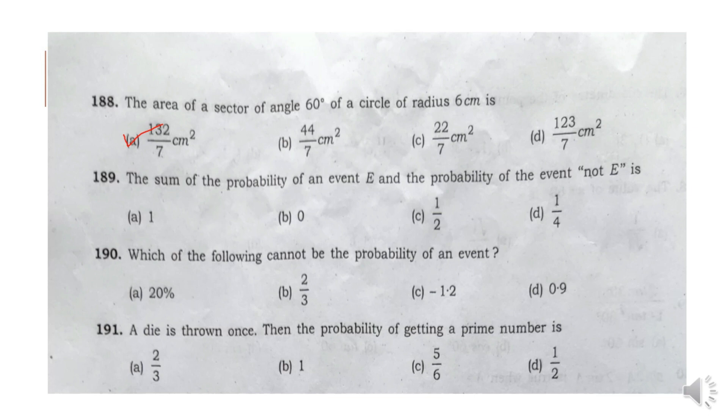Next: The sum of the probability of an event E and the probability of the event not-E is Option A: 1.